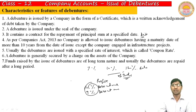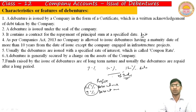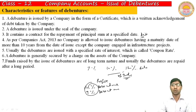A debenture is generally secured by a charge on the assets of the company. We discussed that debentures are usually issued against security, and in some conditions they can be issued without security. But in India, debentures secured by the property of the business are standard — there is no trend to issue debentures without security. That practice prevails in England only.